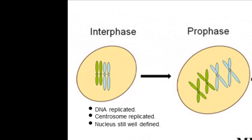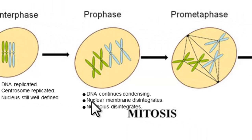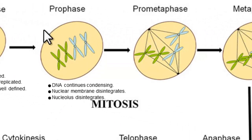First off, interphase. What's important is that DNA starts to replicate and the chromosome replicates. We can see that happening by the time we get to prophase — we have these X structures for each chromosome. As we enter proper prophase, the DNA continues to condense, the nuclear membrane breaks down, and these chromosomes spread throughout the cell. The nucleolus also disappears.